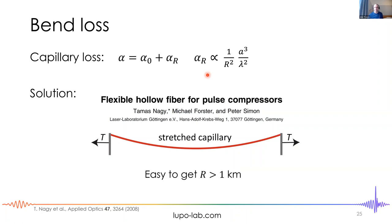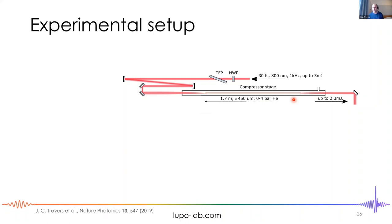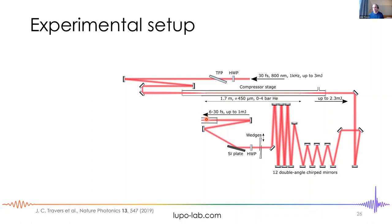Here is the experimental setup for the first demonstration. We start with 30-femtosecond Ti:sapphire pulses, compress them through a more-or-less conventional compressor — a 1.7-meter stretched capillary using SPM followed by chirped mirrors. We then couple into a second stage with much shorter pulses of 6 to 30 femtoseconds, using a 3-meter-long fiber with a 250-micron core diameter. It is in that second stage where we get the soliton dynamics.